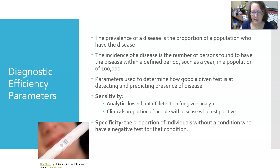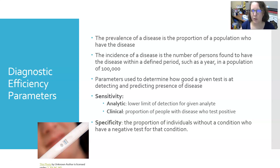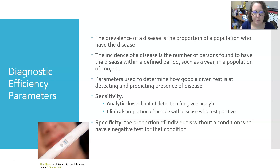The parameters used to determine how good a given test is at detecting and predicting the presence of disease include things like sensitivity and specificity, and we're also going to look at positive and negative predictive values.